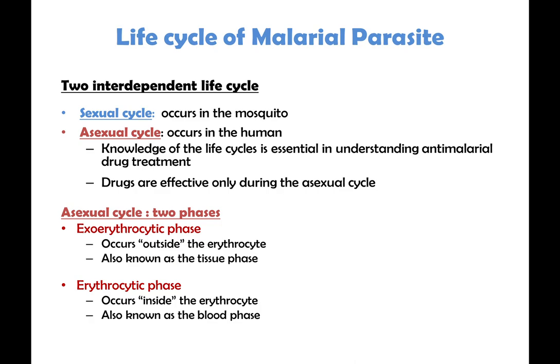For convenience we broadly classify the asexual cycle into two phases. The exoerythrocytic or liver phase, which occurs outside the erythrocytes — also known as the tissue phase — and drugs acting here are called tissue schizonticides. The erythrocytic phase, which is clinically detected more easily, occurs in the erythrocytes or RBCs — also called the blood phase — and drugs acting at this level are called erythrocytic schizonticides or blood schizonticides.